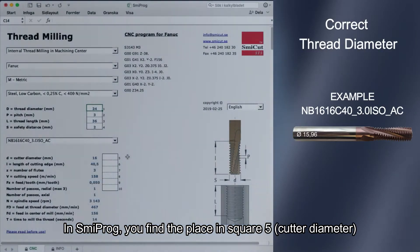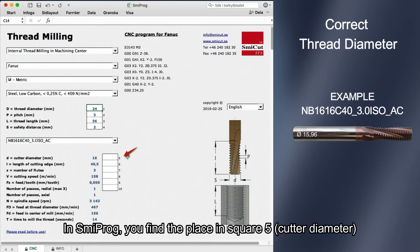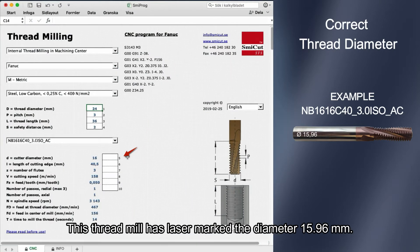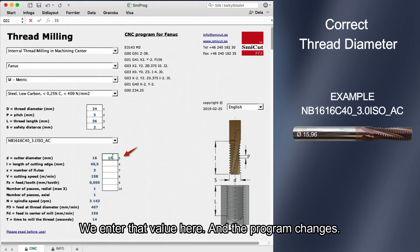In Smeeprog you find a place in square 5, cutter diameter. This thread mill has laser marked the diameter 15.96 mm. We enter that value here, and the program changes.